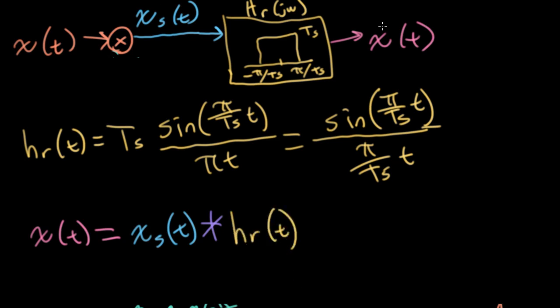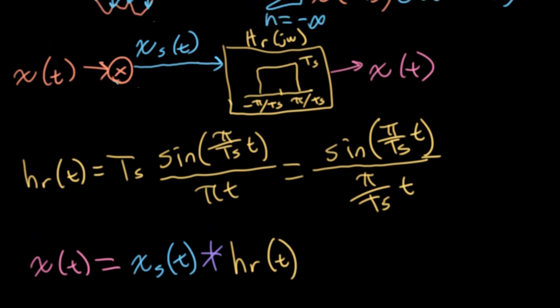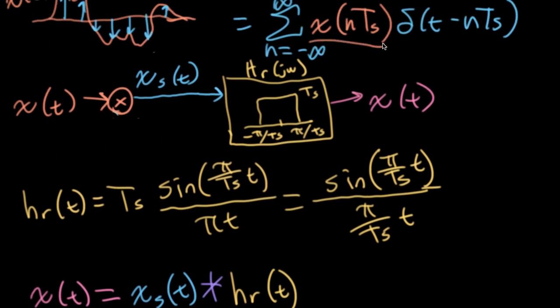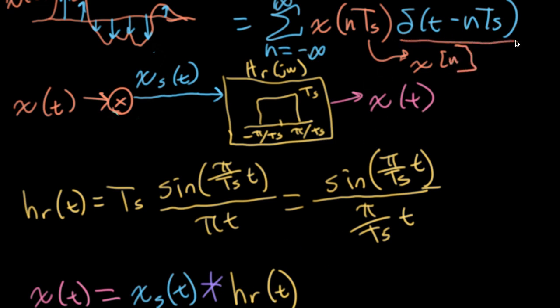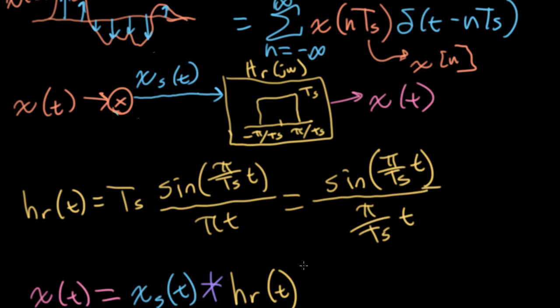We would convolve our weird Dirac-sampled sequence with our reconstruction filter impulse response. To remind ourselves of what xs actually was — this x of n times TS is our set of samples, which we could write as x of n in brackets. What else are we doing? We're taking all of these delta functions and convolving with our impulse response.